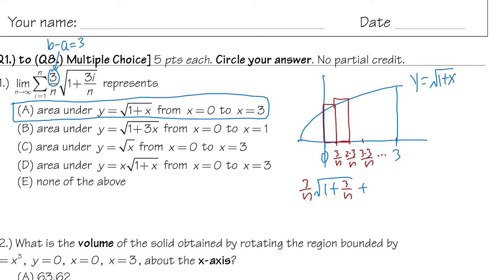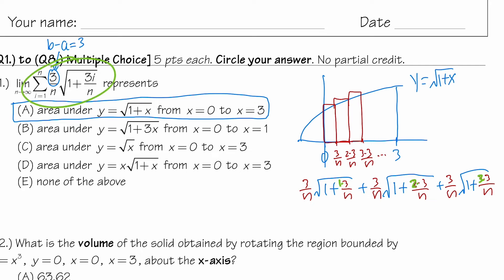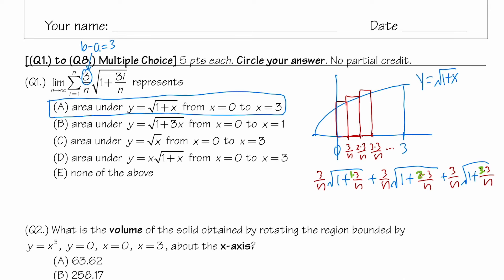Next we add the second rectangle: base 3 over n, x value 6/n, height √(1 + 6/n) = √(1 + 2·(3/n)). And the third: 3/n width, x = 9/n = 3·(3/n), height √(1 + 3·(3/n)). Notice the pattern: 1×3, 2×3, 3×3 — that's the running index i going from 1 to n. Putting this into summation notation, everybody has the 3/n factor, so that's why the answer comes out as it does.